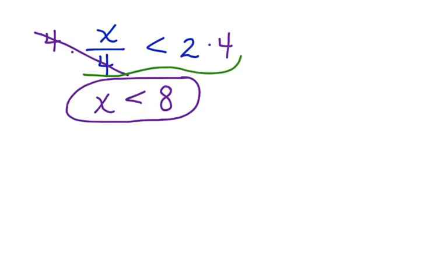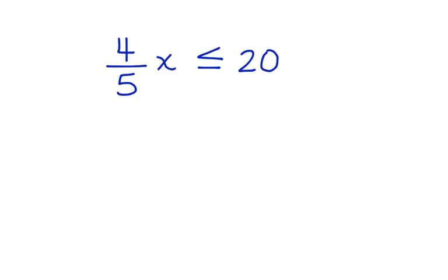Sometimes you're also going to see inequalities that have fractions or decimals in them. Let's take a look at how to work with one of those. 4 fifths x is less than or equal to 20. I want to get x alone on the left side of the inequality. So to do that, I'm going to multiply by the inverse of this fraction — the reciprocal — so that it will cancel. Multiplying by this reciprocal will give a product of 1.